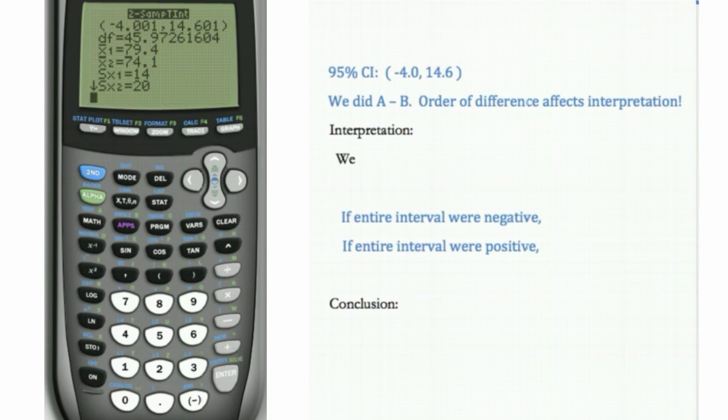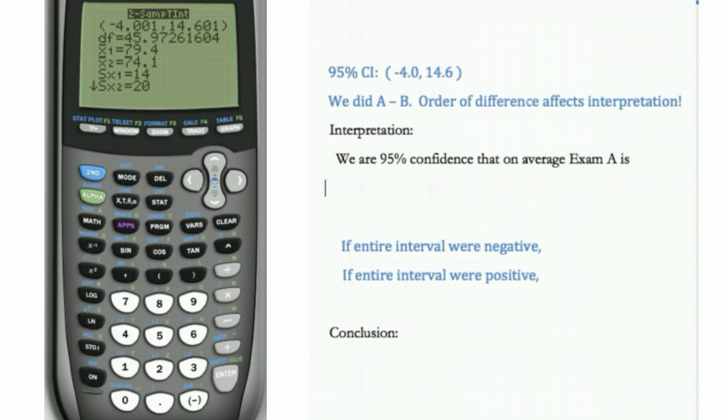So for our interpretation, we can say we are 95% confident that on average, exam A is 4 points harder to 14.6 points easier.